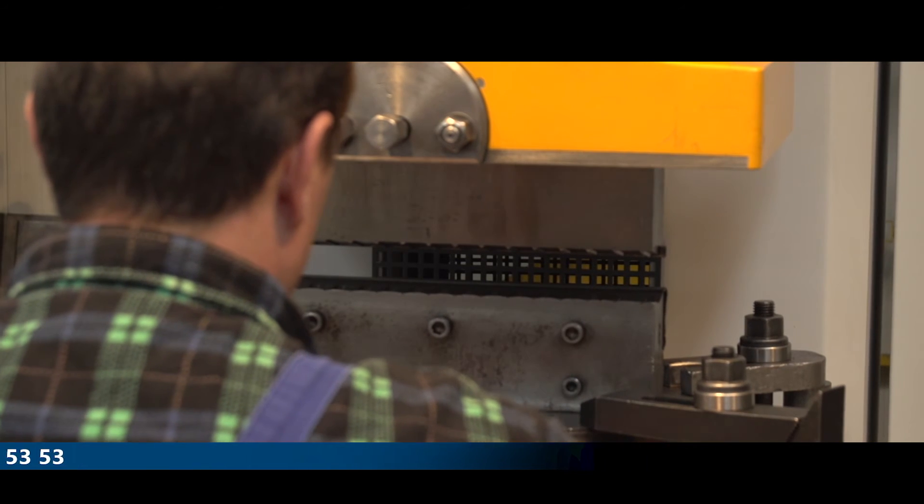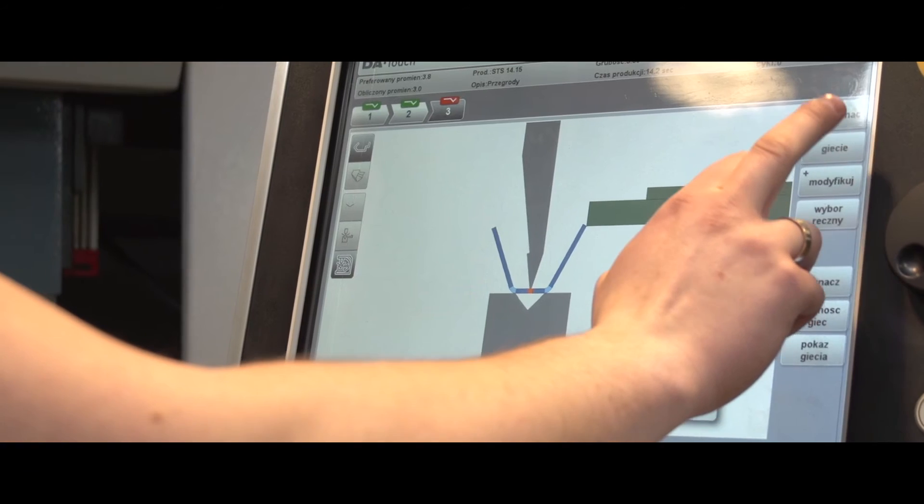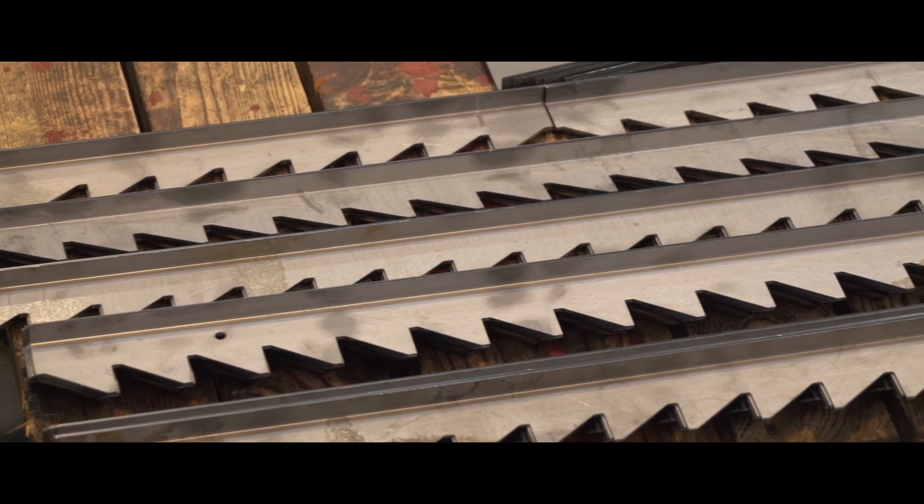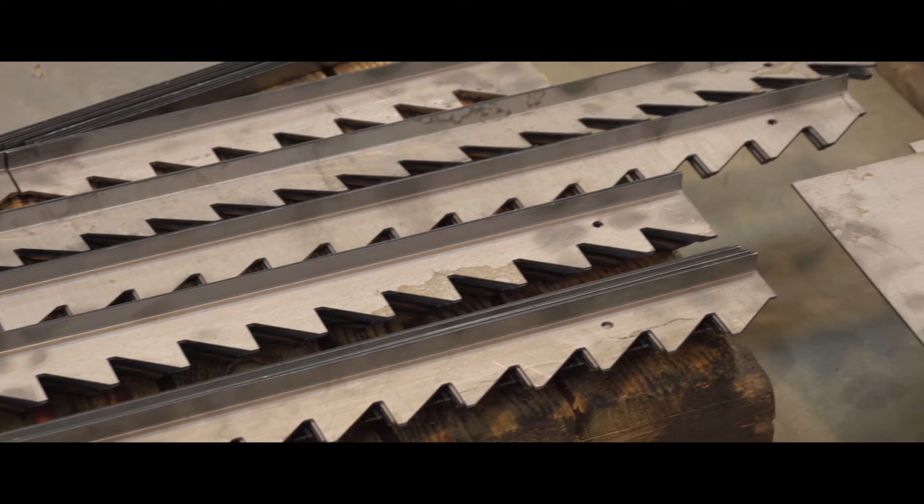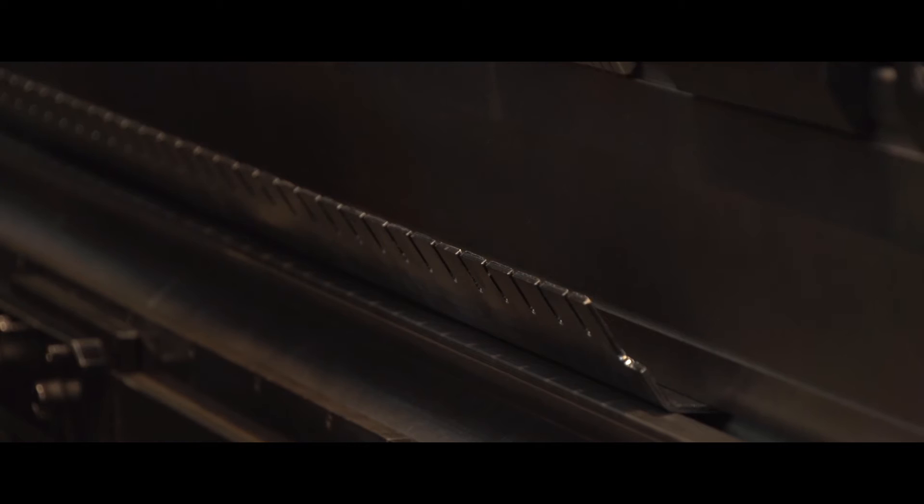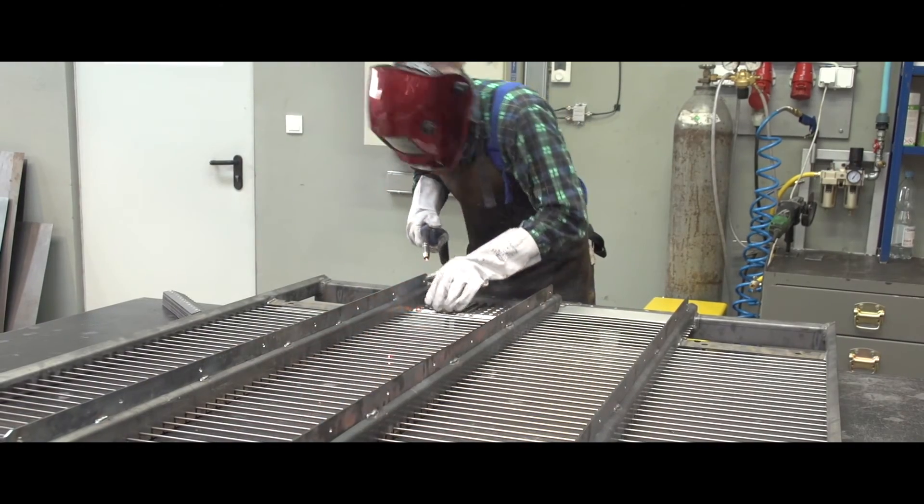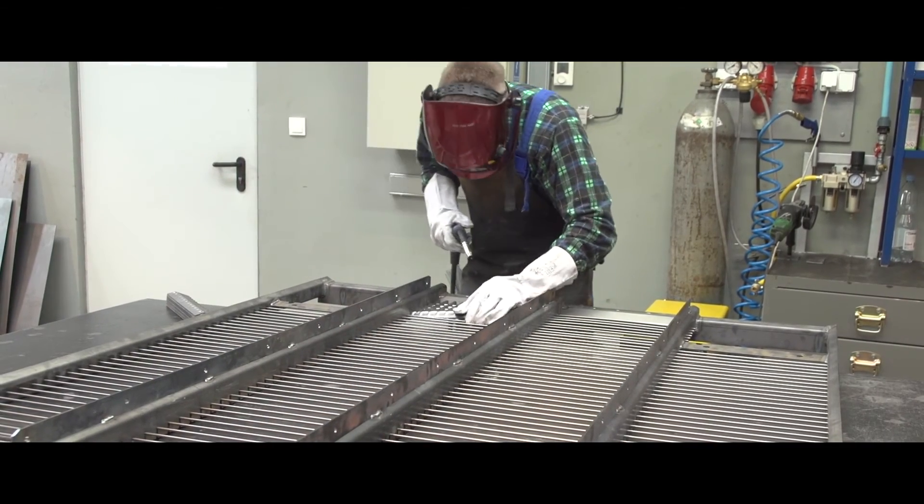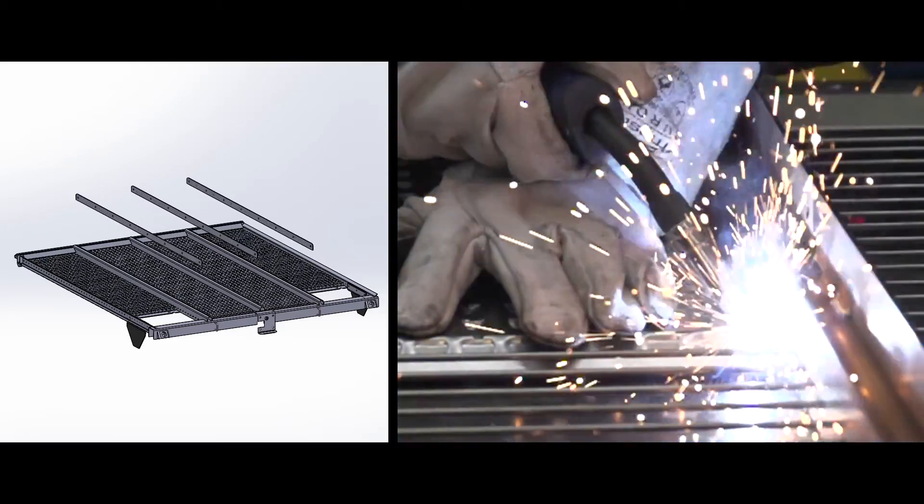Nacisk jest bardzo duży – 80 ton. W nowoczesnej hali znajduje się też prasa krawędziowa. Następuje tu gięcie żebra poprzecznego do sita. Prasa ta posiada cztery sterowane osie. Przygotowana jest już rama sita, która została wycięta laserem. Rozpoczyna się proces spawania lamel oraz zgrzewanie.